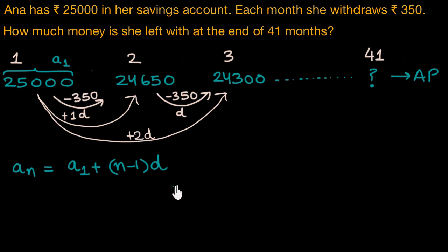And with this out of the way, I would want you to pause the video here and figure out the 41st term all by yourself. So, let's solve this. We need to figure out the 41st term. The first term is 25,000.